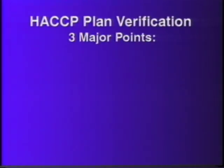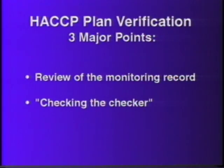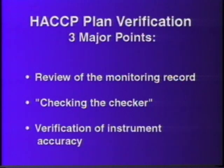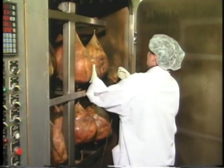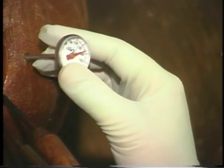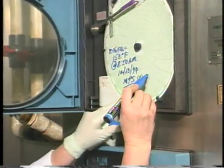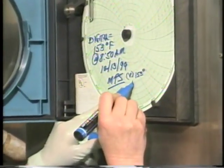Verification is to a HACCP plan what monitoring is to a CCP. The major points of HACCP plan verification include review of the monitoring record, review of the person doing the monitoring or checking the checker, and verification of instrument accuracy. Another employee verifies the accuracy of the two internal probes by checking the internal temperature with a third thermometer, and she records this third temperature on the recording chart.